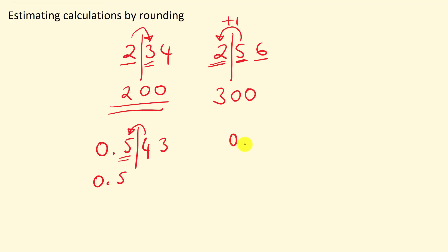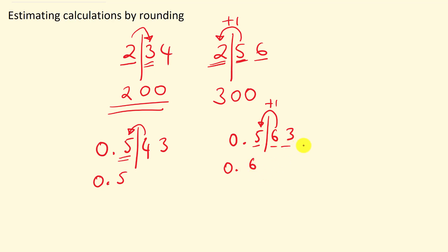Let's look at another decimal: 0.563. Zero is not significant. The next digit after the decimal is 5 — that is our first significant figure. Draw the line after the 5. The number after the line is 5 or over, so we add 1 to the 5, giving us 6. So 0.563 rounded to one significant figure is 0.6.